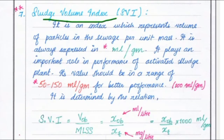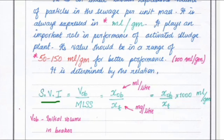Next is the sludge volume index, SVI — an important factor. It is an index which represents the volume of particles in the sewage per unit mass, always expressed in milliliter per gram. It plays an important role in the performance of the activated sludge plant. For better performance, the value should be in the range of 50 to 150 milliliter per gram. SVI equals VOB divided by MLSS, which equals XOB divided by XT. Here XOB is in milliliter per liter and XT is in milligram per liter, so the liters cancel giving milliliter per milligram. Multiplying by 1000 to convert milligram to gram gives units of milliliter per gram.